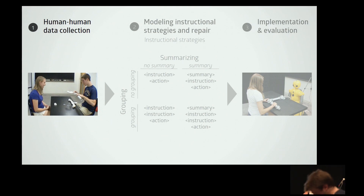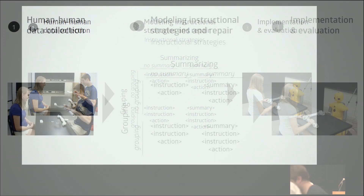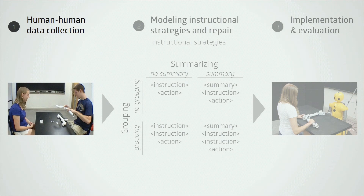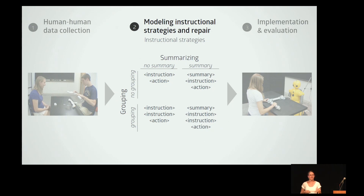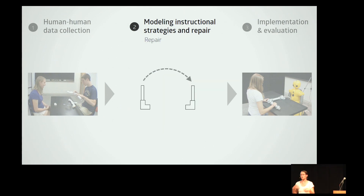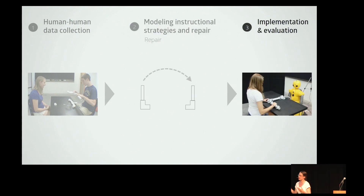To better understand how we can create more effective robots, we first looked at human-human interactions in an instructional task in a laboratory setting to understand how instructors give instructions and correct mistakes. Regarding giving instructions, we discovered two dimensions — grouping and summarizing — along which instructions can vary. Grouping indicates whether one or multiple instructions are given at a time, while summarizing indicates whether the instructor first summarizes what the outcome of the following instructions should be. We developed a correction policy from both human-human data and the literature, then implemented both instructional strategies and our correction policy on a robot guiding human students through a pipe-building task.